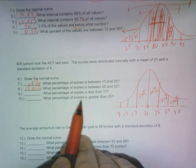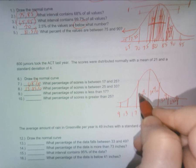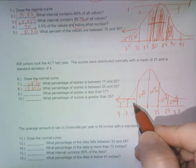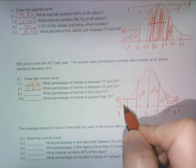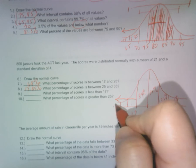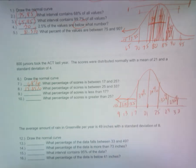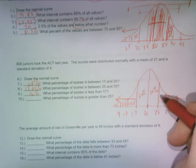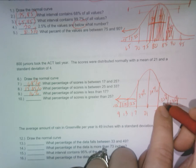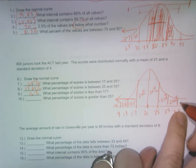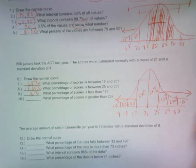What percentage of scores is less than 17? So here's 17, go less than. And again, that would be 13.5, 2.35, and 0.15. Add all those up together and you should get 16%. What percentage is greater than 25? 13.5, 2.35, and don't forget that 0.15, so greater than we go that way also 16%. Making sense I hope, if not, sorry.